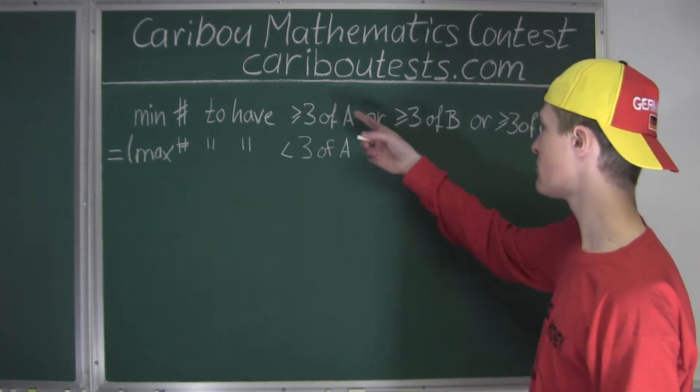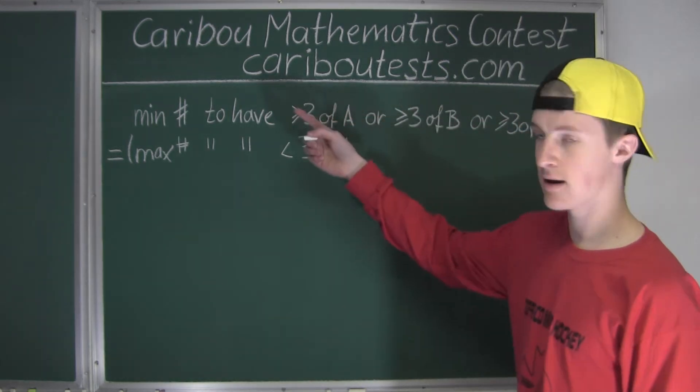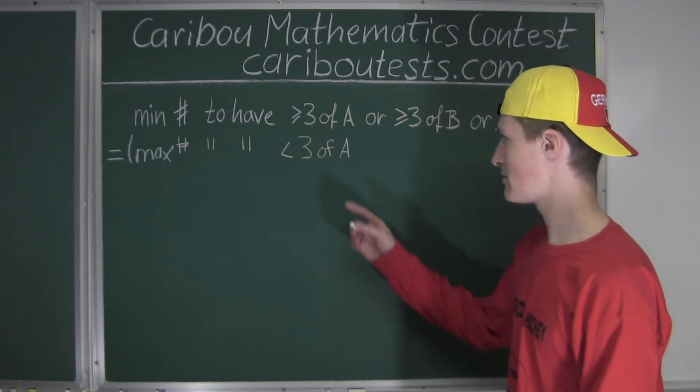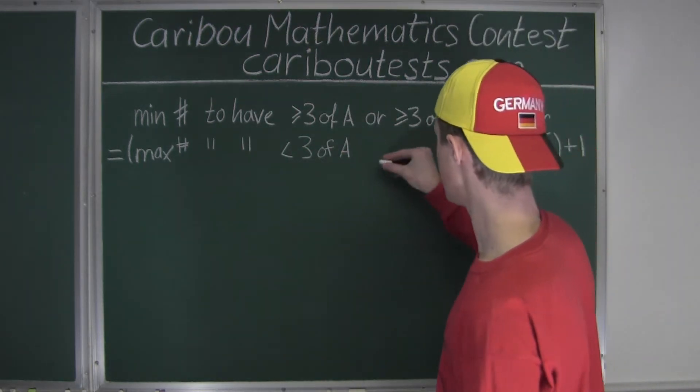And likewise, if we had an AND in the top, then we would replace that with an OR in the bottom. Okay, so we will have less than three of A, and...